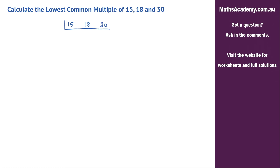I'm looking for a factor of any of those numbers. The first factor I'll use is 2, because we do have a couple of even numbers there — 18 and 30. Now 2 won't go into 15, so we'll just write 15. 2 will go into 18 nine times, and 2 will go into 30 fifteen times.